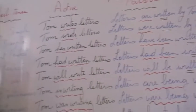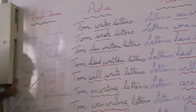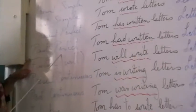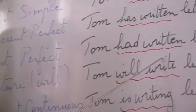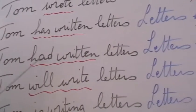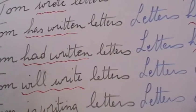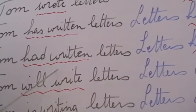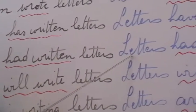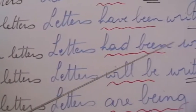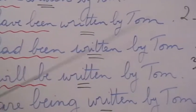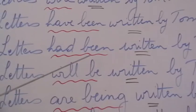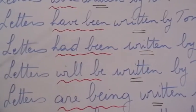Now let's take the past perfect. The past perfect is 'had' plus the past participle. Tom had written letters. Again, I put 'to be' in the past perfect: letters had been written by Tom. Pay attention — 'had been', double E.